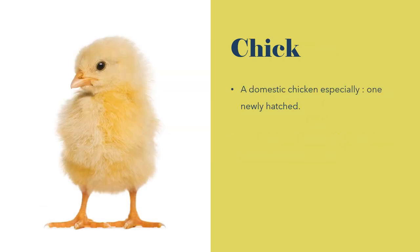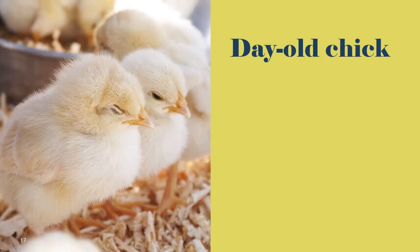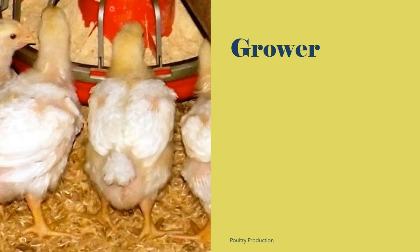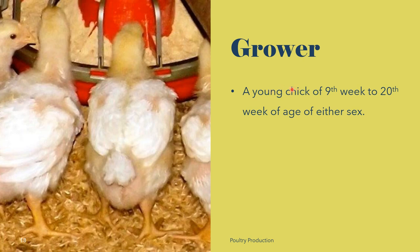The chick is defined as a domestic chicken, especially newly hatched. It is also defined as the young of any bird, or a young of poultry from day old to 7 or 8 weeks of age. A hatched-out chick is called a day-old chick up to 24 hours. In poultry, a grower is a young chick of the 9th to 20th week of age of either sex. The period after brooding to sexual maturity is referred to as the growing period.